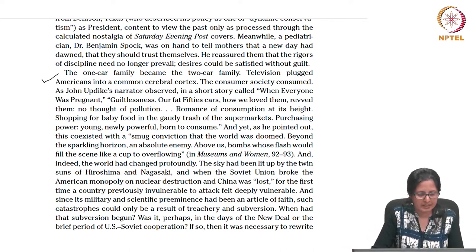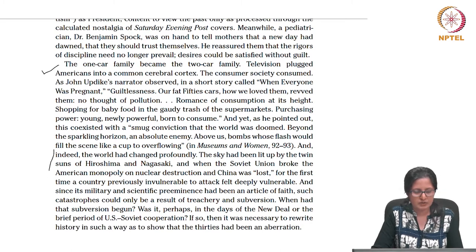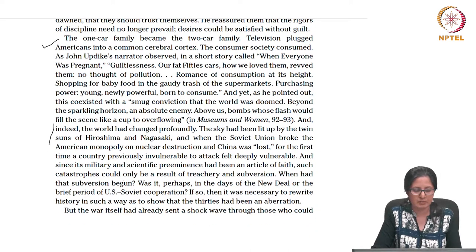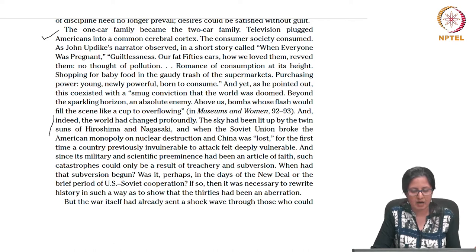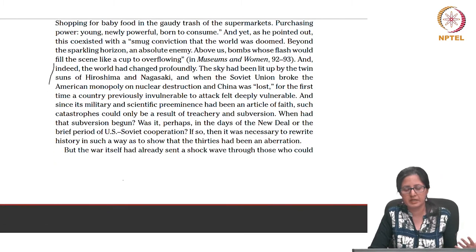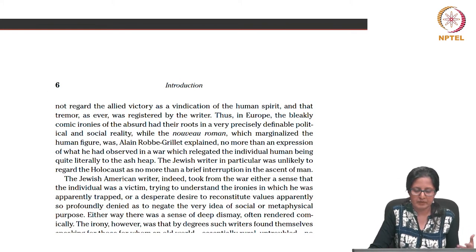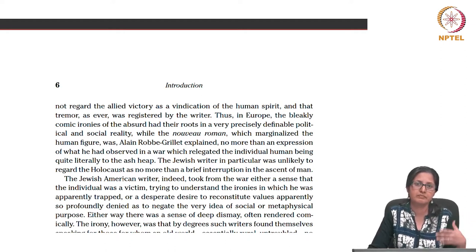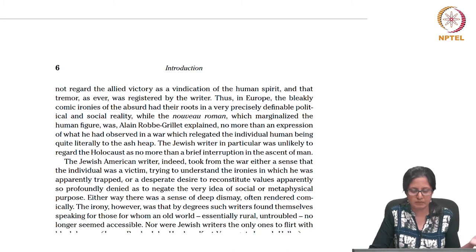The world had changed profoundly. The sky had been lit up by the twin suns of Hiroshima and Nagasaki. When the Soviet Union broke the American monopoly on nuclear destruction and China was lost, a country previously invulnerable to attack felt deeply vulnerable. Since its military and scientific preeminence had been an article of faith, such catastrophes could only be a result of treachery and subversion. We do know that the anxiety, the stress, the conflicts within families — conflicts which look like individual conflicts — are in fact very heavily handed down from and through decisions made by the state. We can find this reflected in some of Albee's plays too, as we saw in The Zoo Story.